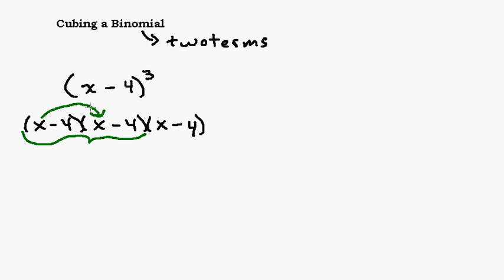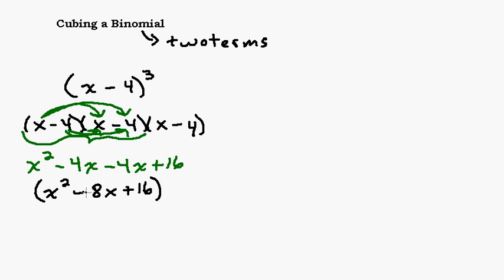First, x times x gives you x squared. Then x times negative 4 gives you negative 4x. We did x times everything in the second binomial. Now we're going to take negative 4 times everything. Negative 4 times x is negative 4x, and negative 4 times negative 4 is positive 16. If we simplify that, we get x squared minus 8x plus 16. Remember, that was just the answer to the first two binomials, x minus 4 times x minus 4.